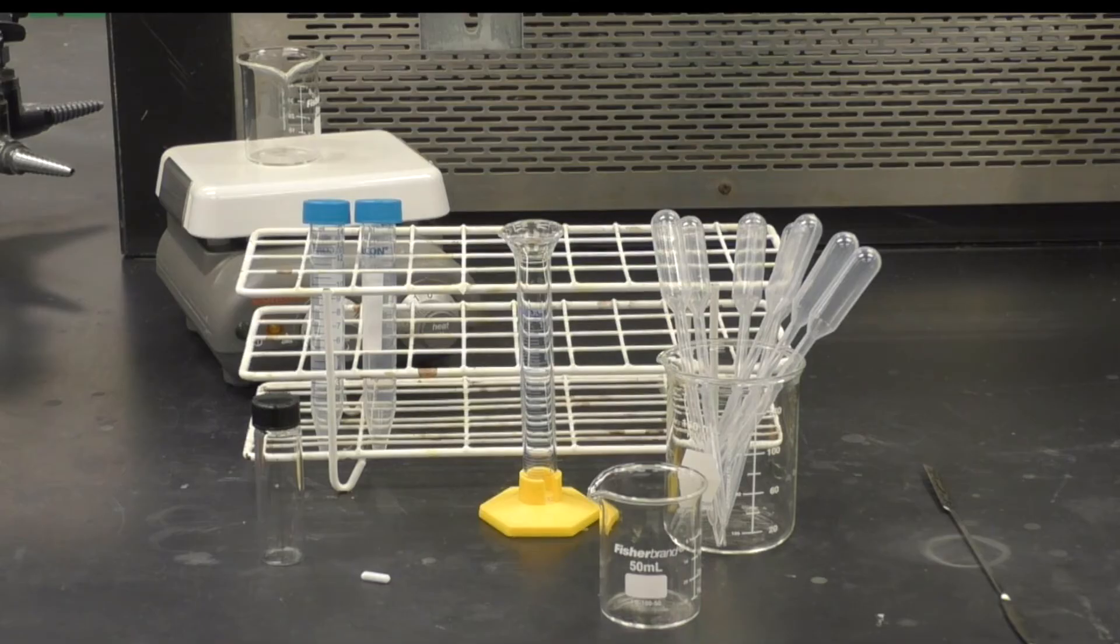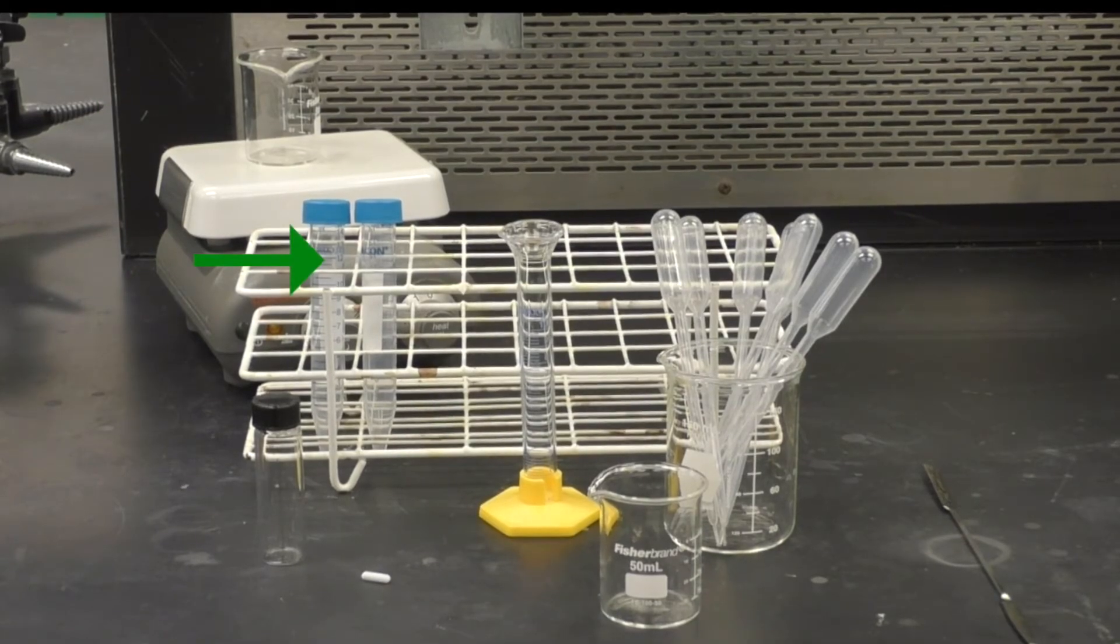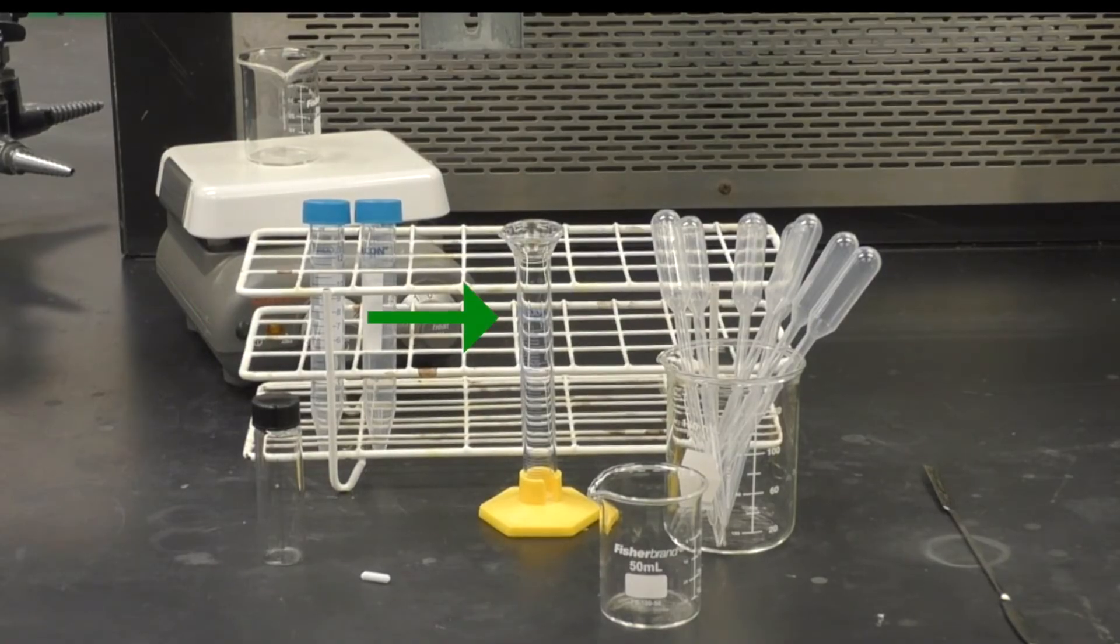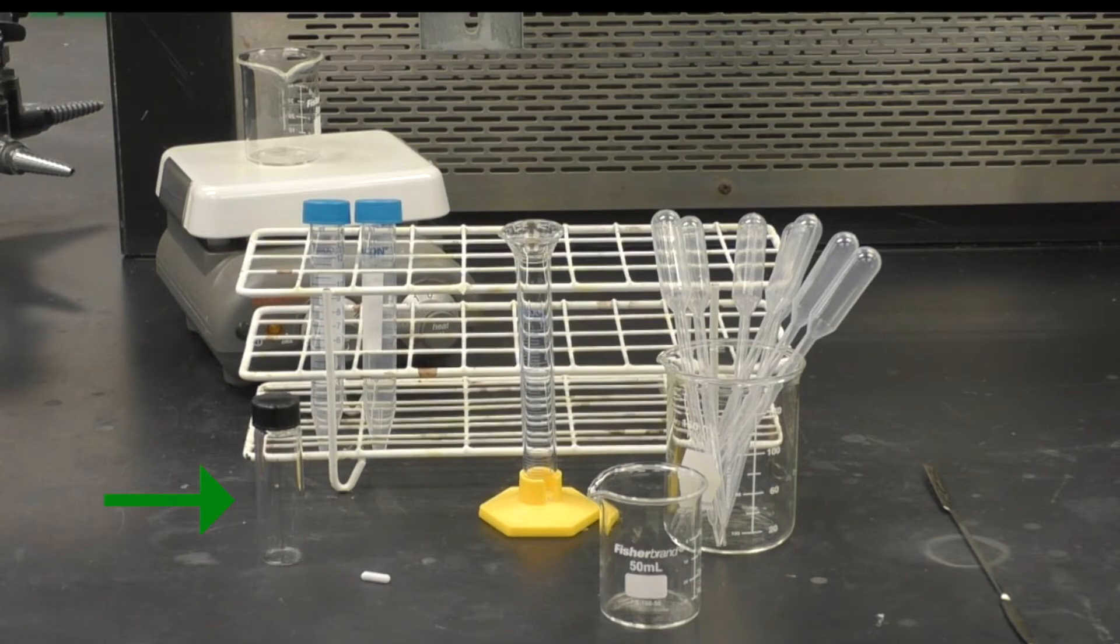While it is cooling, gather the items you'll need for the workup. A hot plate stirrer, two 50 ml beakers, one or two centrifuge tubes, a test tube holder, a 10 ml grad cylinder, some transfer pipettes, a stir bar, and a 4 dram vial.